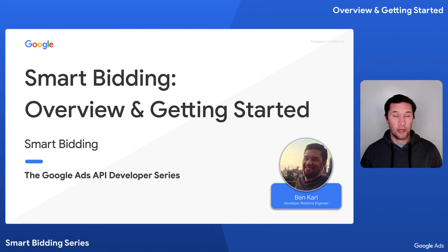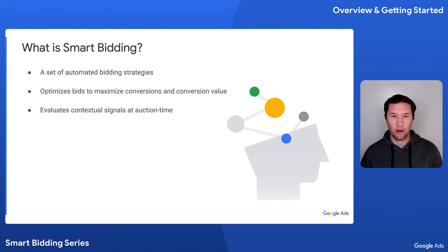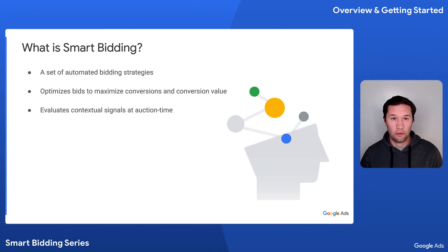If you're here, chances are you already know about Smart Bidding, but in case you don't — Smart Bidding is a set of automated bidding strategies like Maximize Conversions or Maximize Conversion Value that use machine learning to optimize for conversions or conversion value and set precise bids at each and every auction. Automated bidding strategies are important because they enable you to optimize your bidding much more efficiently than if you manage them manually. Some campaign types, like Performance Max, can only use Smart Bidding strategies.